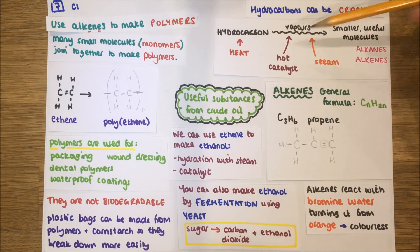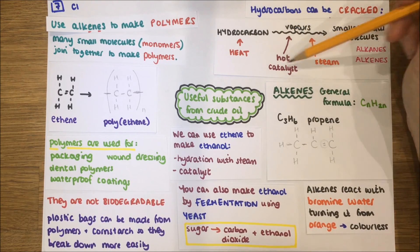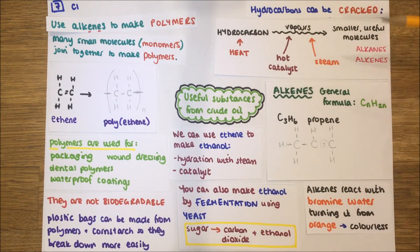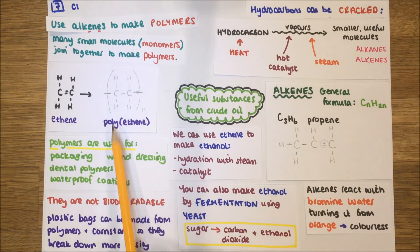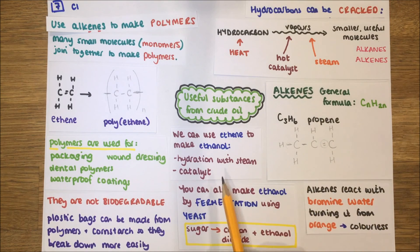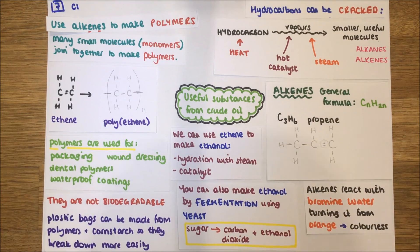So we've looked at how we can crack long-chain hydrocarbons from crude oil, the conditions needed, the formula of an alkene, how to identify it with bromine water, what we can use polymers for, and how we can make ethanol. All of that covers chapter seven: useful substances from crude oil.